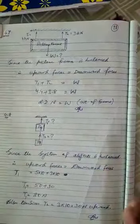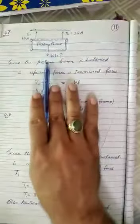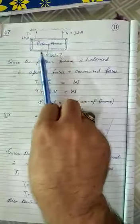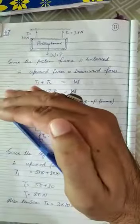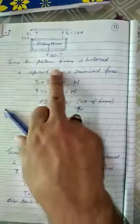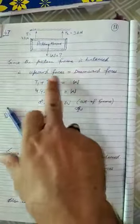So according to the figure you can see, now this frame, basically the picture frame, is hanging by these two strings. So hanging means now this object is at balanced state. So since the picture frame is balanced, it means we can say upward forces and downward force are the same.